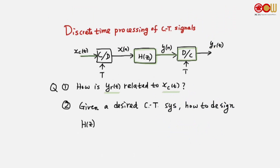Having covered both C-to-D and D-to-C converters, we are now ready to talk about discrete-time processing of continuous-time signals. We often want to filter or process a continuous-time signal using computers. We first pass it through a C-to-D converter to get a discrete-time sequence, then process it with a discrete-time filter H_c, and then convert the output y[n] back to a continuous-time signal via a D-to-C converter.